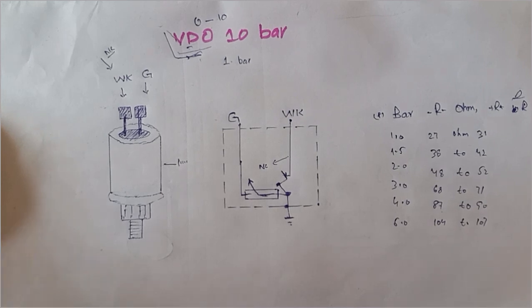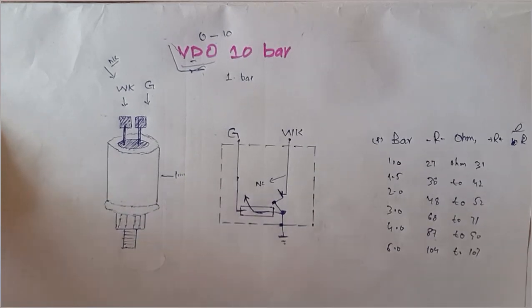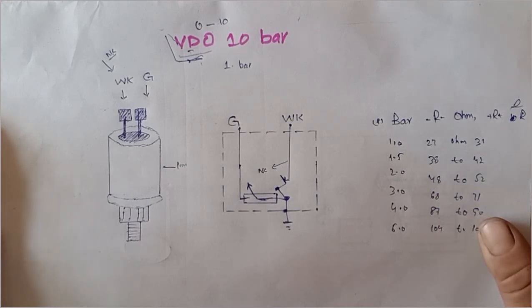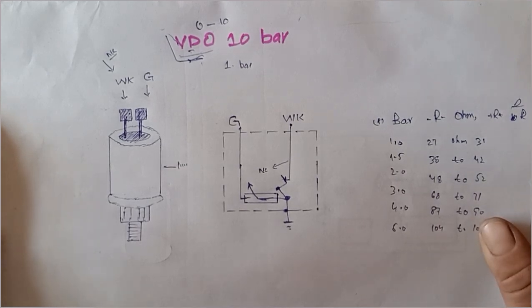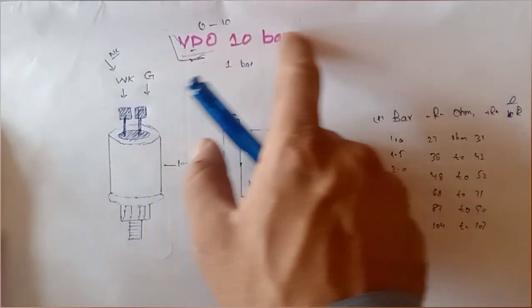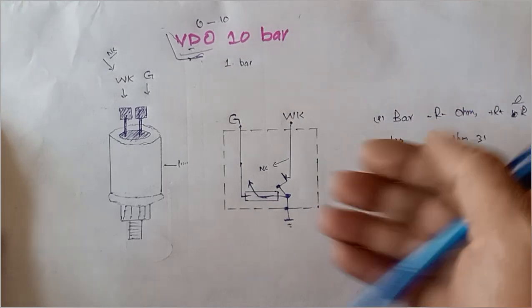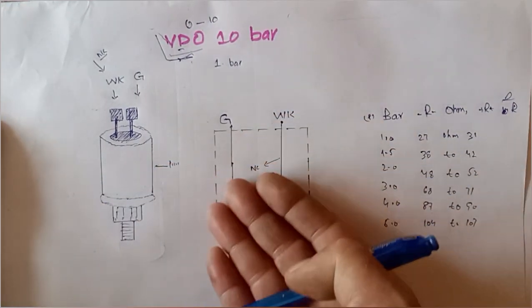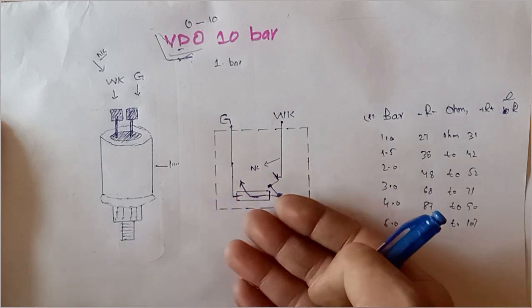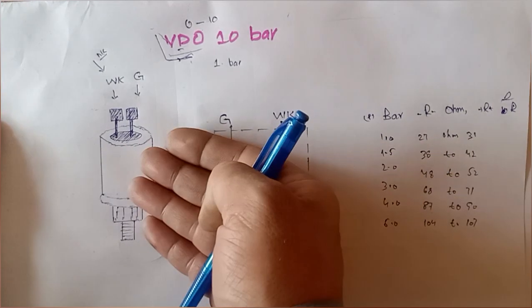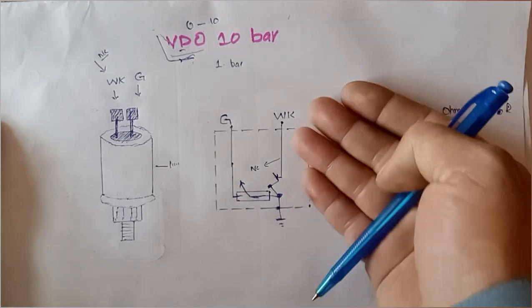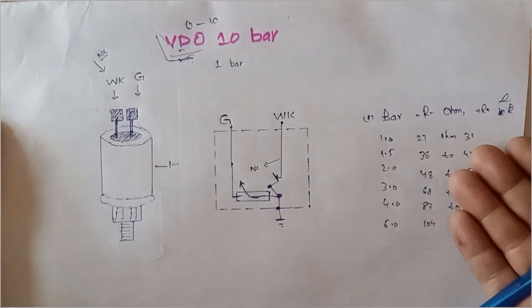Hi and Assalamu Alaikum, welcome back once again to Technology Information Channel. Today we are going to talk about the VDO 10-bar oil pressure sender, also called oil sensor — how this sensor works, what is the internal diagram of the sensor, and how to identify from the resistance to the bar reading.